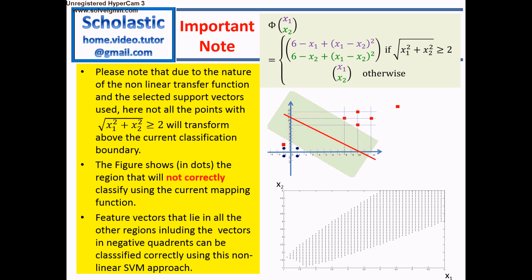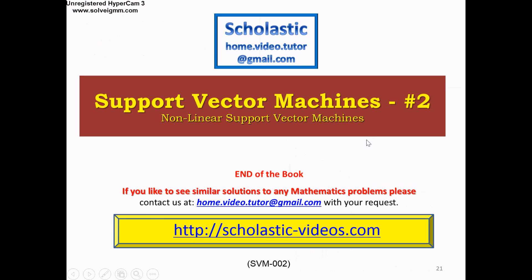This is a simple example to understand the non-linear SVM problem. You can find different mapping functions for different applications depending on your dataset. Once you apply the mapping function, even a non-linear problem becomes linear, and you can classify vectors using the linear SVM rule. That's the end of this short book on Support Vector Machines — Non-Linear SVMs. For more videos visit scholasticvideos.com, and if you have any questions please drop a line. Thank you.